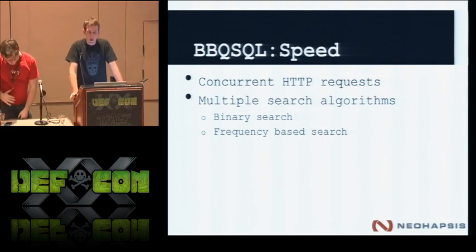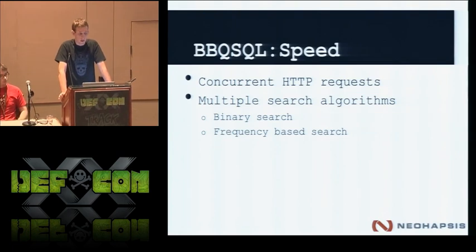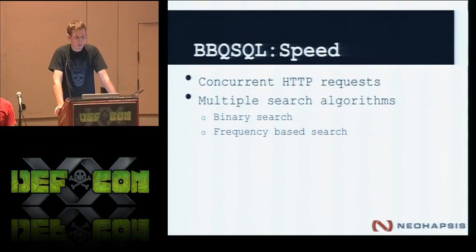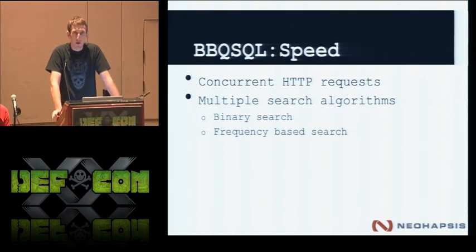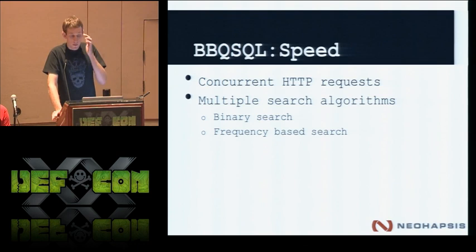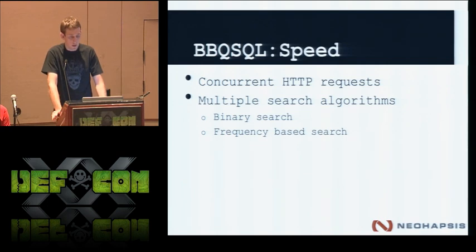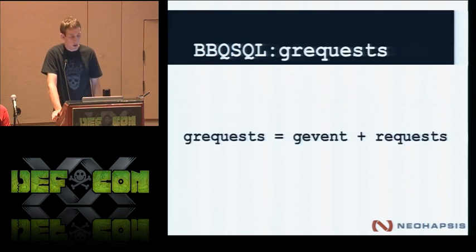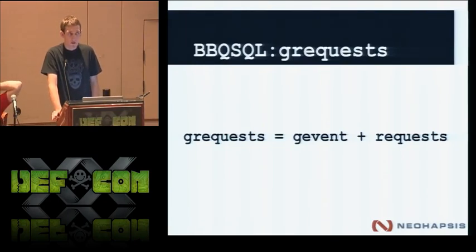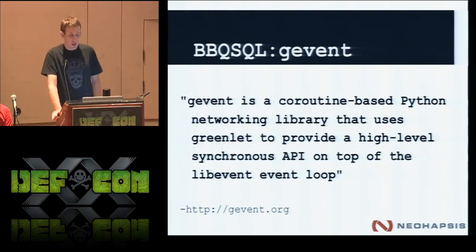One of the things we worked hard on is making this tool very fast. Two main things: how we make HTTP requests, and the search algorithms. A lot of tools historically use threading for doing many things at once — we're not doing that. Instead I'm using a library called Grequests, a combination of Python's Gevent and the Python requests library. Gevent is a coroutine-based Python networking library that uses greenlets to provide a high-level synchronous API on top of the libevent event loop.